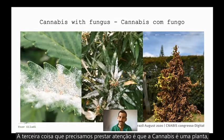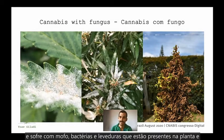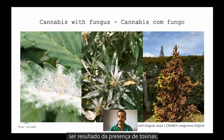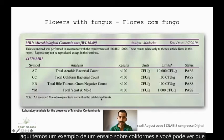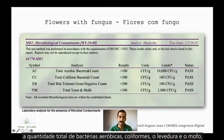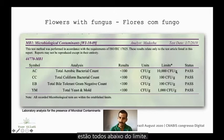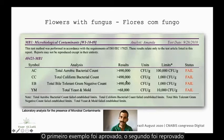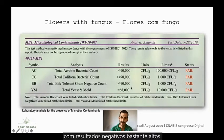The third thing we need to notice is that cannabis is a plant and it suffers from mold, bacteria, and yeast that are present on the flower. These also harm the quality of the flower and can result in the presence of toxins. To monitor these pathogens, here is an example of a colony forming unit assay. You can see that the total aerobic bacterial count, the coliform, the yeast, and the mold are all below the limit in the first sample — it passed. The second sample failed with very high results, so that cannabis sample needs to be disqualified and cannot be administered to patients.